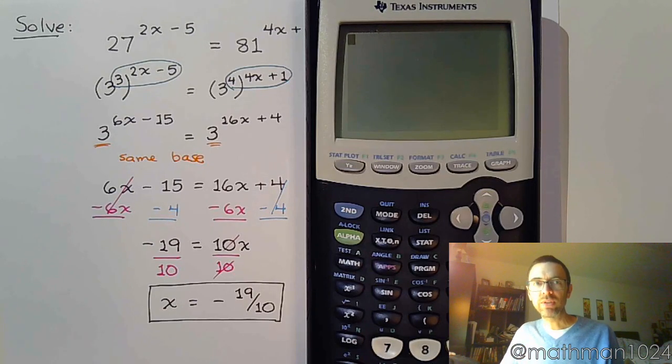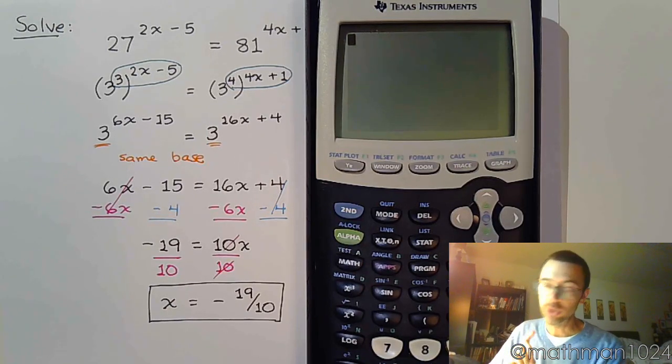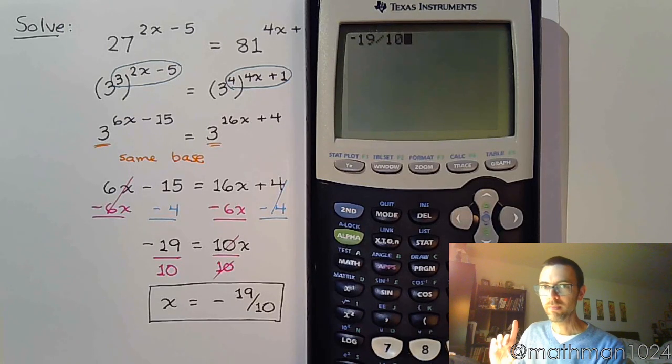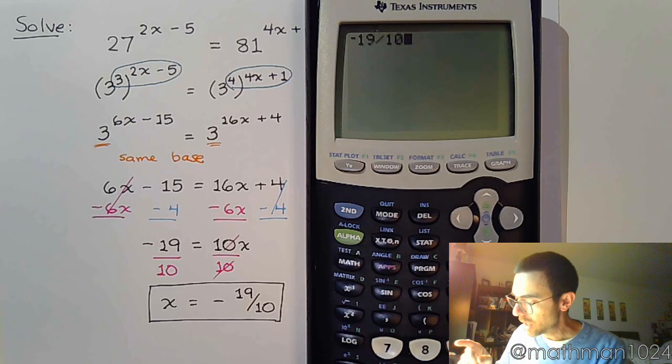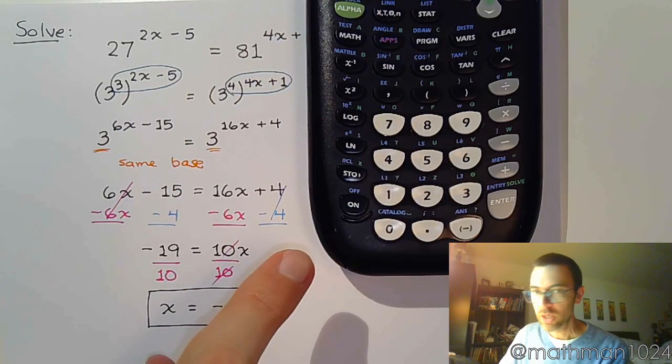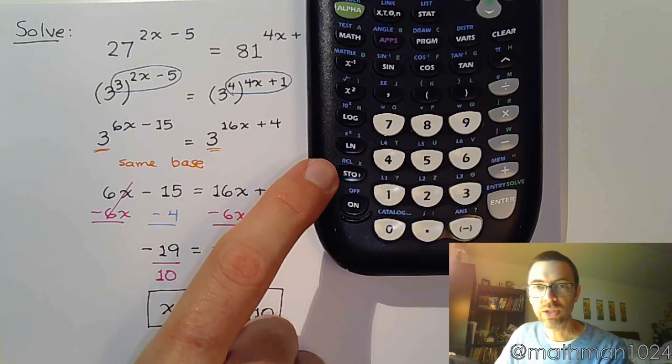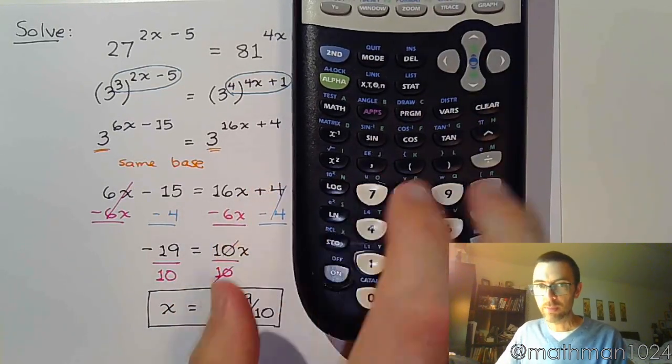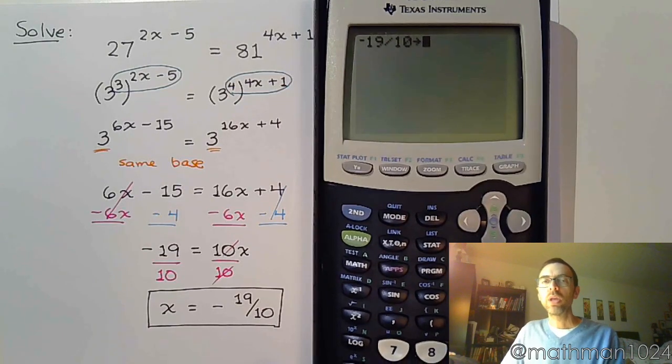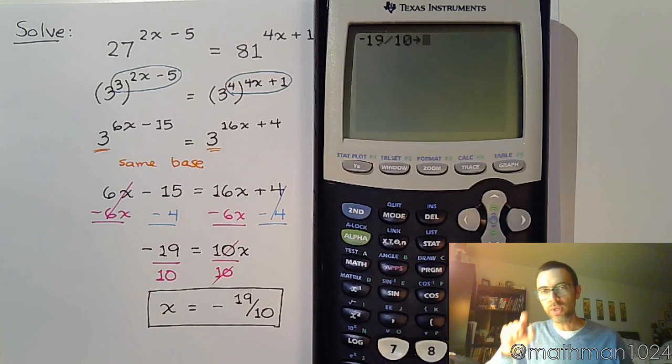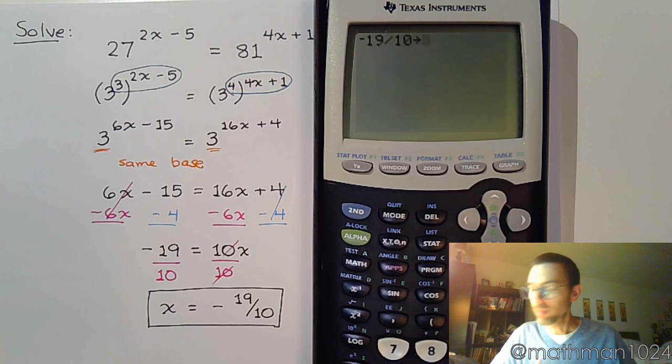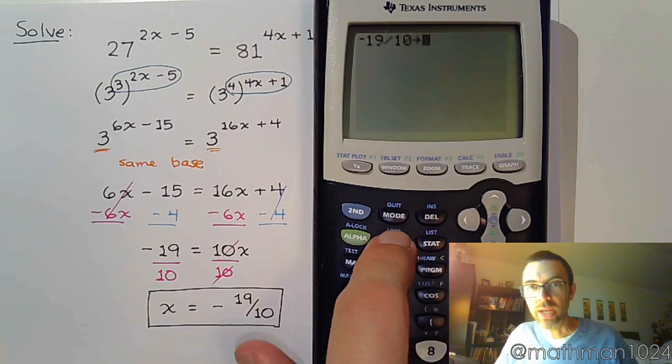So, to check, I don't want you to have to rewrite and replace all the x's with negative 19 over 10. Instead, we're going to cheat a little bit. We're going to type in negative 19 divided by 10. And instead of hitting enter, if you look down here, you see there's a button that says STO with a little arrow. Well, that's the store button. So, if I press that button, you'll see that I now have an arrow. And what I can do with that arrow is I can say, I want you to take this value, whatever it is, and I want you to store it into something. Well, the easiest thing is to store it into x.